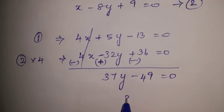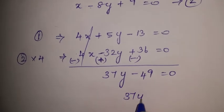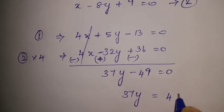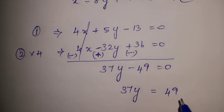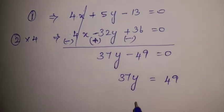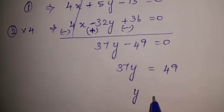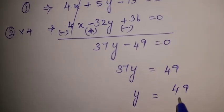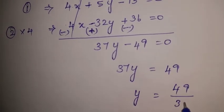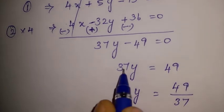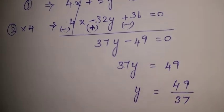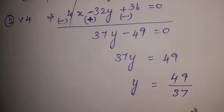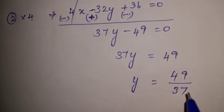So, 37y equals 49, which gives us the value of y equal to 49 divided by 37. So the y value is found first.